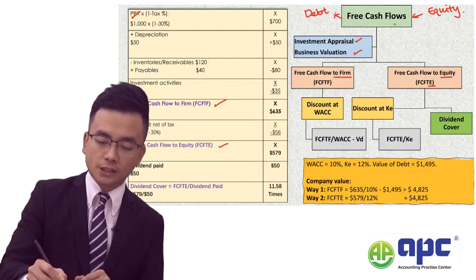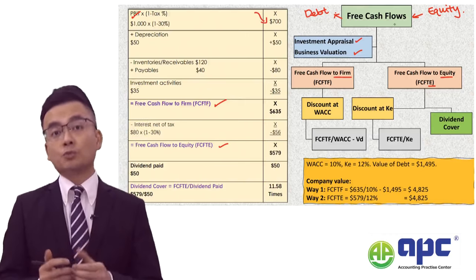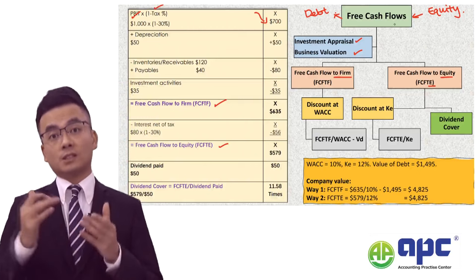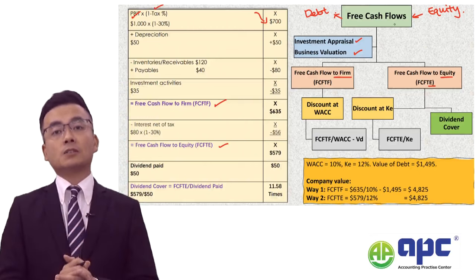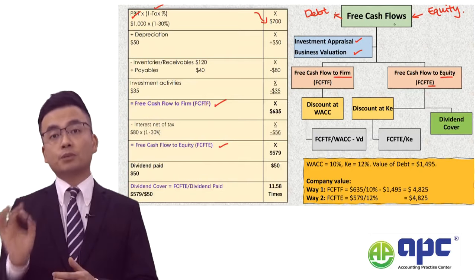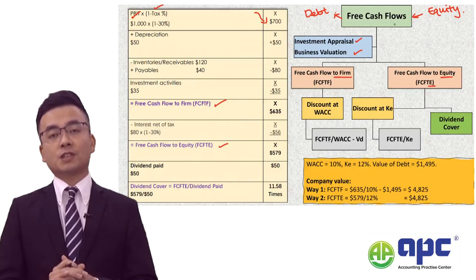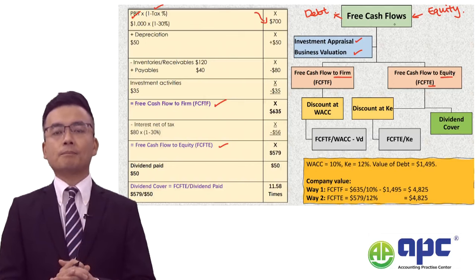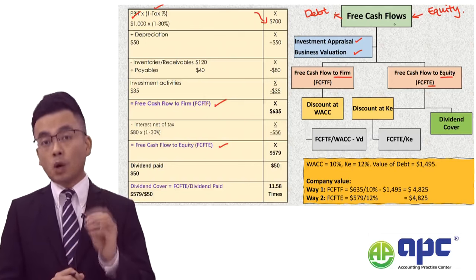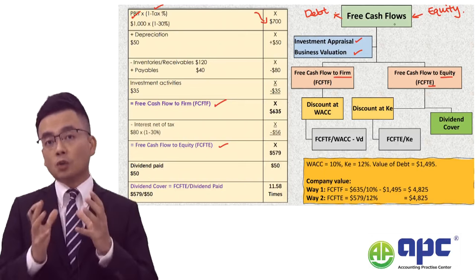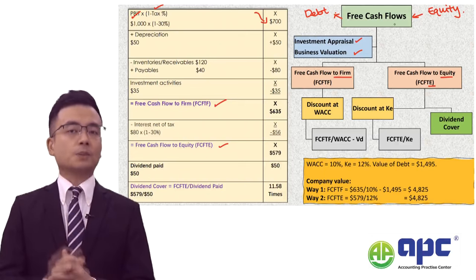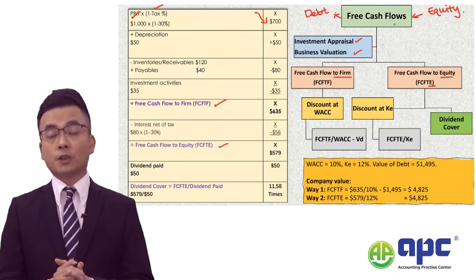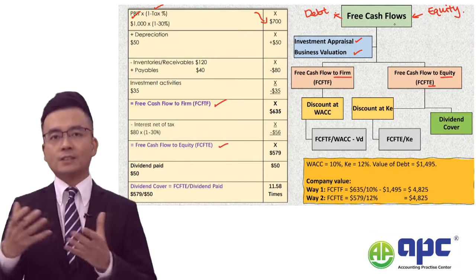The first step is to calculate $700 by multiplying PBIT of $1,000 by (1 minus the 30% tax rate). This $700 approximates the profit after tax — the money left within the business. We are not subtracting interest at this stage because we need to work out the free cash flows to firm, attributable to both debt and equity holders.